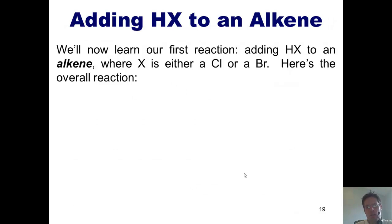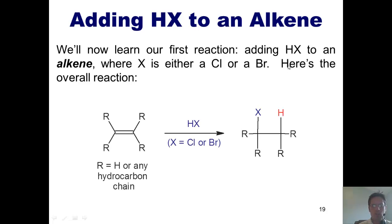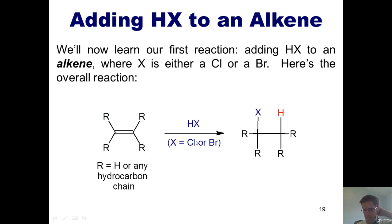I now want to show you your very first organic reaction: adding HX to an alkene. HX is a substance where H is hydrogen and X is either chlorine or bromine — so hydrochloric or hydrobromic acid. If you take an alkene, where the R groups represent any hydrogen or hydrocarbon chain, and react it with HX, the double bond gets converted to a single bond, and you end up placing an X and a hydrogen on those positions.